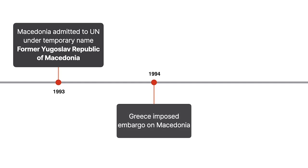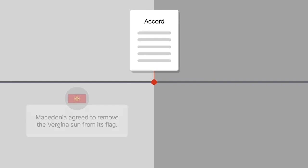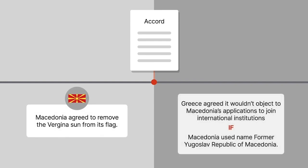The following year, Greece imposed an embargo on Macedonia. In 1995, Greece and Macedonia entered into an interim accord to stabilize the relationship between the countries. Under the accord, Macedonia agreed to remove the Vergina Sun from its flag. Greece agreed that it wouldn't object to Macedonia's future applications to join non-UN-affiliated international institutions, as long as Macedonia used the name Former Yugoslav Republic of Macedonia.